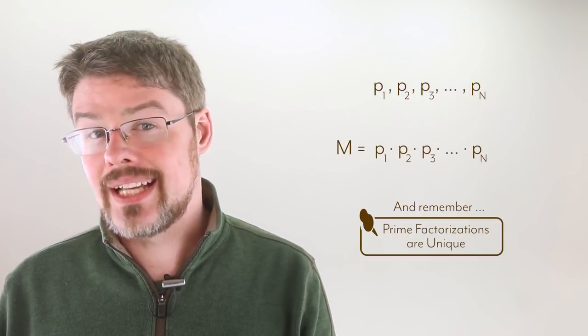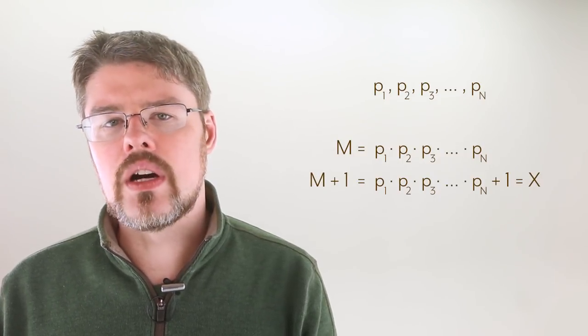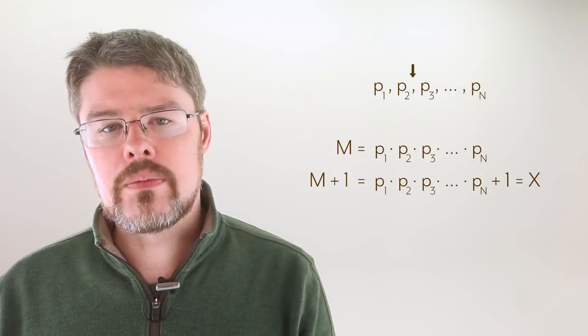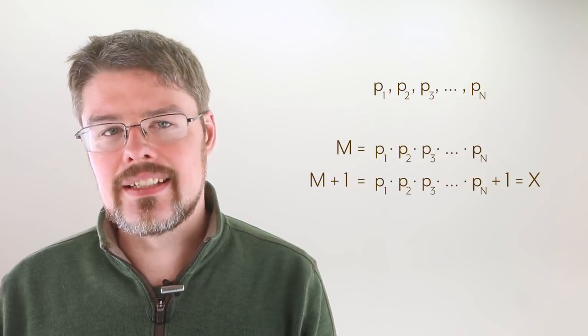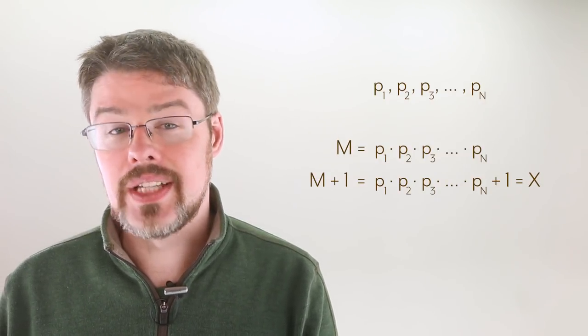Doesn't seem to get much more composite than that. Now, let's say that the number m plus 1, let's call it x, has a prime number on our list that divides it. What that means is that there is a prime number on this list that divides both m and x, which doesn't work. Here's why.